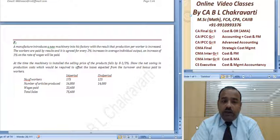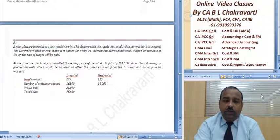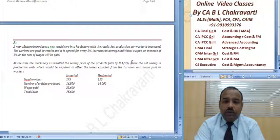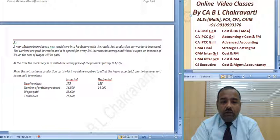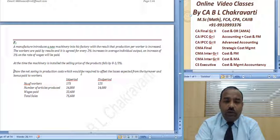At the time the machinery is installed, the selling price of the product falls by 8⅓%. Show the net savings in the production cost which would be required to offset the losses expected from the turnover and bonus paid to the worker. This is the first period and the second period.